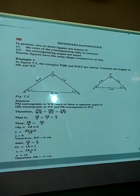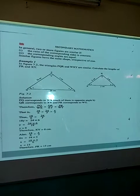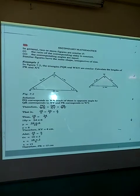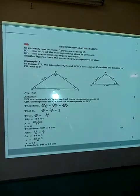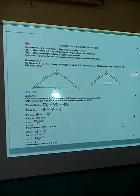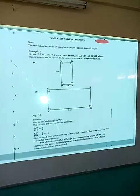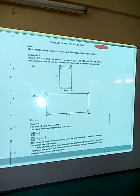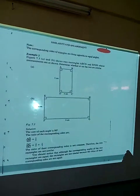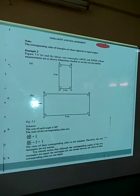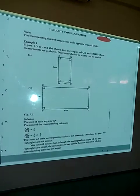We have used the comparison of corresponding sides to find the missing sides of the triangle. Note that the corresponding sides of the triangle are those opposite to equal angles.